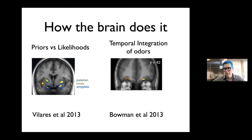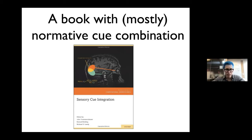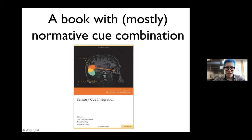There's also information about integration. If you're interested in the combination of priors and likelihoods, I recommend a little edited book mostly by Michael Bernstein with Julia Trommershäuser, which contains book chapters about how priors and likelihoods are combined and how likelihoods are combined with one another. You can see Bayes' rule right there on the title of the book.